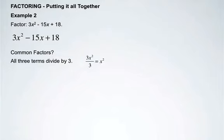All three terms divide by 3. 3x squared divided by 3 is x squared, negative 15x divided by 3 is negative 5x, and 18 divided by 3 is 6.